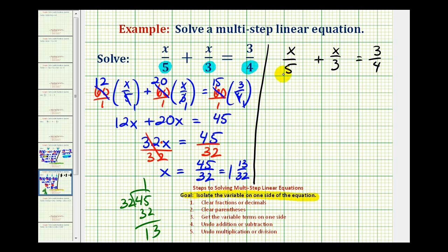If we have a denominator of five and three, the least common denominator would be fifteen. So we could multiply this first fraction by three over three, and the second fraction by five over five, to obtain the common denominator of fifteen.